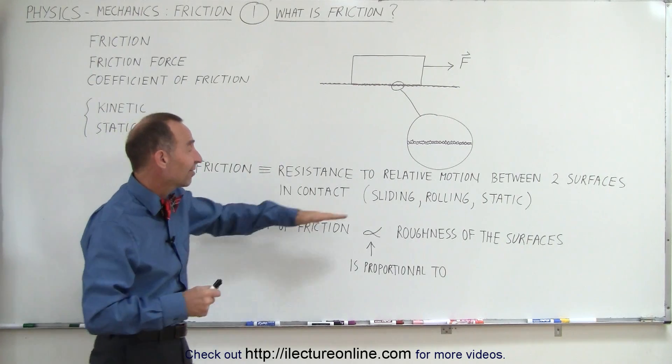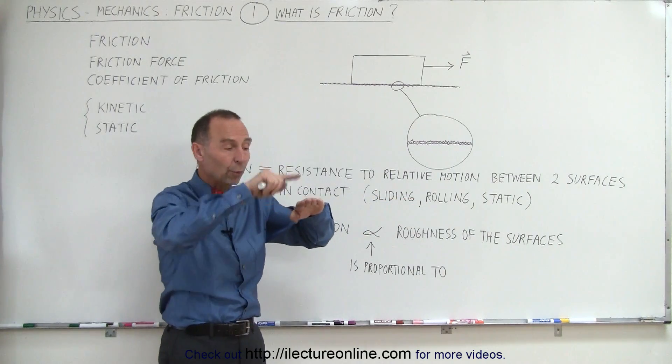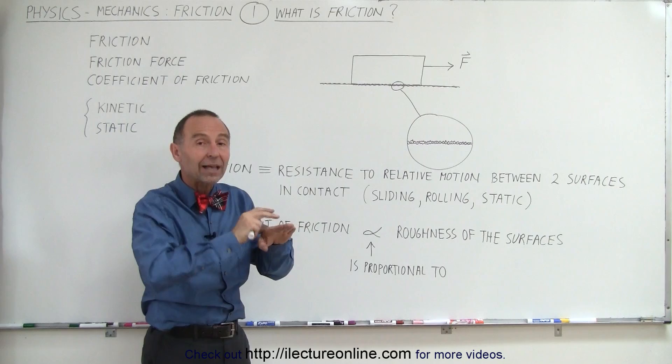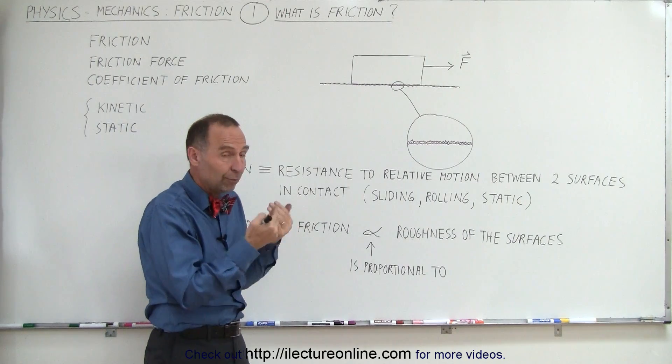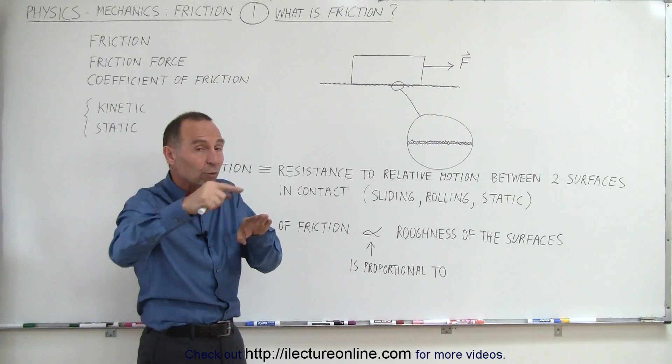Now the motion can be a sliding motion where two surfaces are sliding over one another, or rolling motion where one is rolling over another so that the contact between the two surfaces is essentially static because they're not sliding but one is rolling over the other.